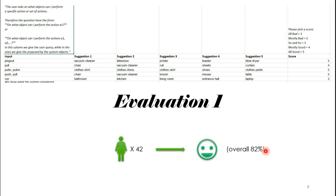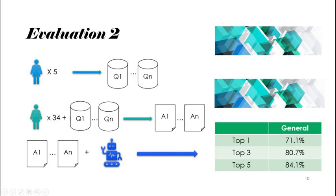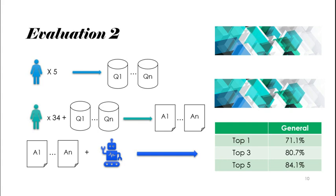In the second method of evaluation, we chose five subjects who were not part of the first evaluation to answer the same questions and gathered sets of gold standard answers. Then 34 subjects from the first evaluation were given the same questions along with the gold standard datasets to answer, and we compared these answers with what our system returns. Because our system ranks its answers, we report top-1, top-3, and top-5 scores. There was a time span of 40 days between the first and second evaluations, so we are confident that the 34 participants did not remember the questions from the first evaluation.